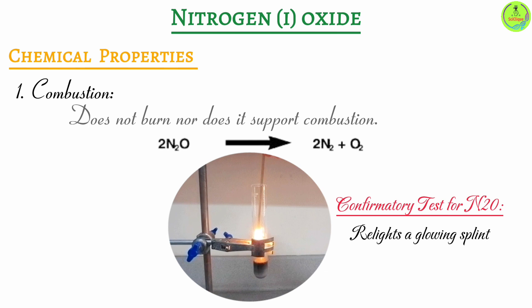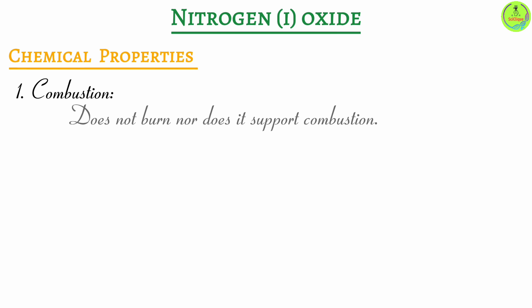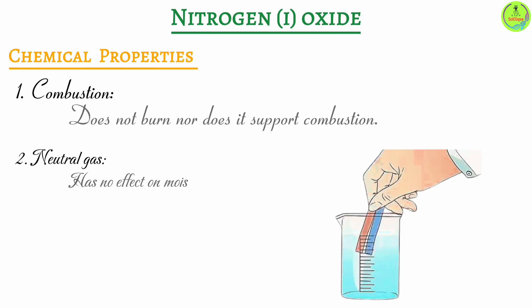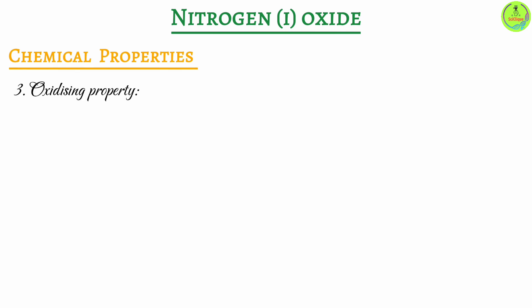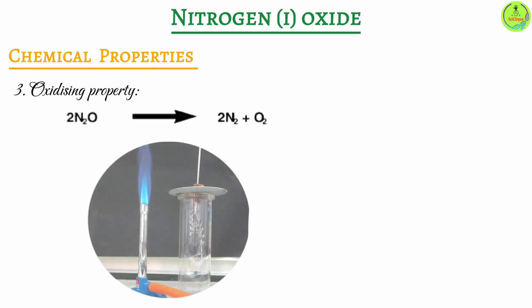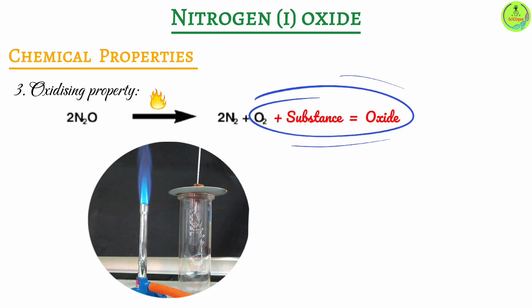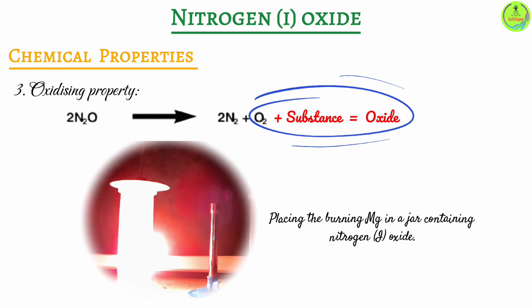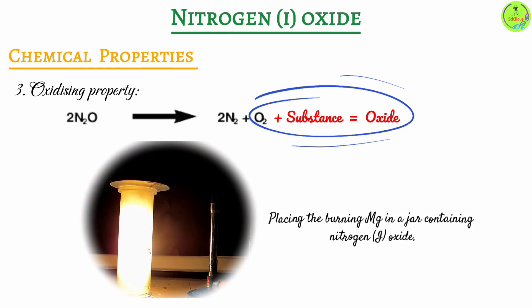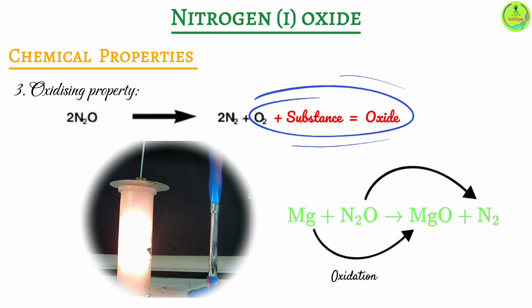The difference between nitrogen one oxide and oxygen is the smell: oxygen is odorless while nitrogen one oxide has a pleasant smell. Nitrogen one oxide has no effect on moist litmus paper because it is a neutral gas. As an oxidizing agent, if you introduce a burning substance into a jar containing nitrogen one oxide, the heat causes the gas to decompose into oxygen and nitrogen; the oxygen is taken up by the burning substance to form an oxide. For example, burning magnesium placed in a jar of nitrogen one oxide continues burning with a bright white flame, forming magnesium oxide — a white solid.